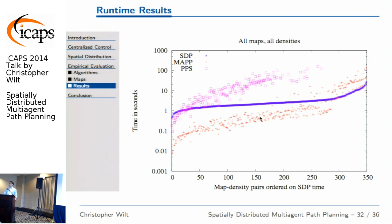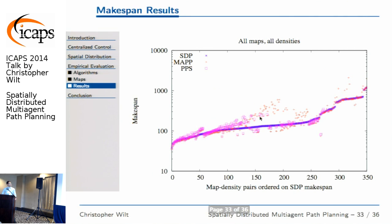Our algorithm gets beaten by about an order of magnitude, but only on the least difficult problems. So if your objective is to reliably and robustly find solutions quickly, this is a very good approach. For the makespan — how long the unit that had to wait the longest took to reach its goal — we see a similar pattern: makespan is comparable for less difficult problems, but as problems get more difficult, the spatial distribution approach does much better. The same trend holds: this approach works very well when the problems are very difficult.